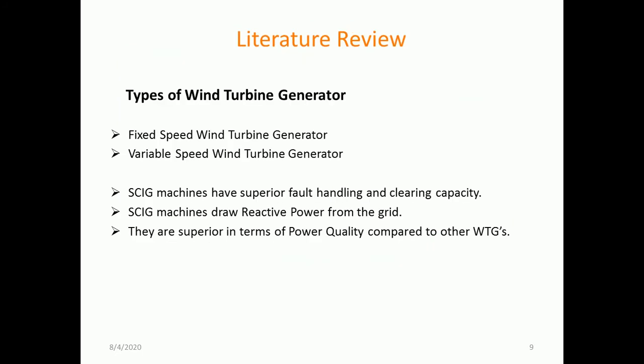For a literature review of what analyses have been made in the wind energy sector and what types of generators are available, previous studies have analyzed fixed wind turbine generators as well as variable speed wind turbine generators. Squirrel cage induction machines have superior fault handling and clearing capacity. They are robust in construction, and squirrel cage induction generator based machines are capable of drawing very less reactive power from the grid. They are superior in terms of power quality compared to other wind turbine generators.